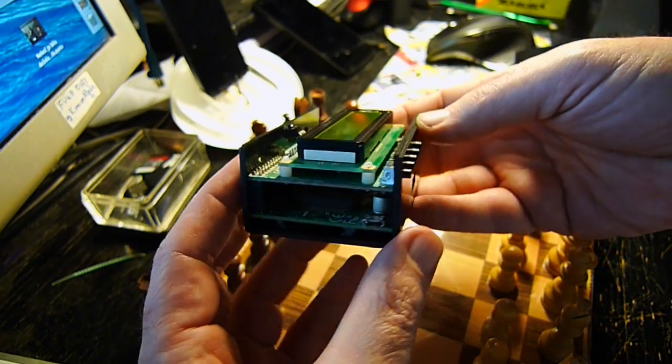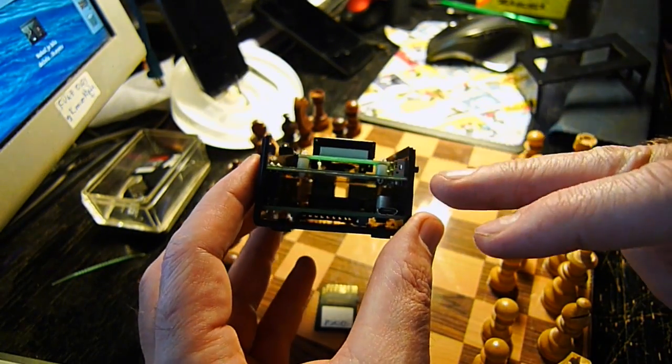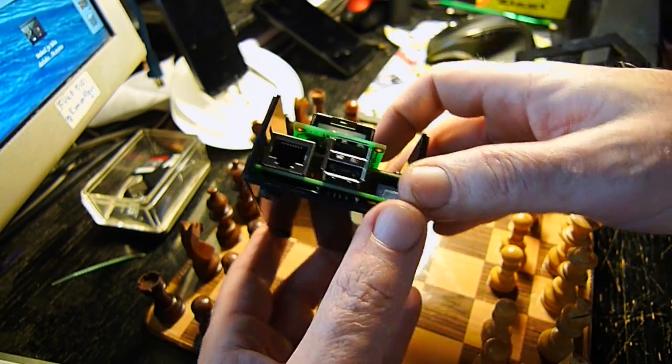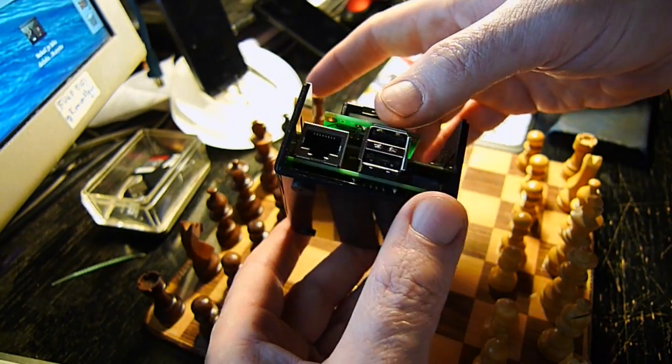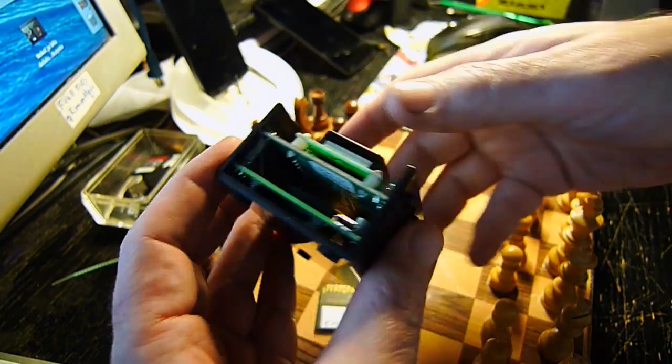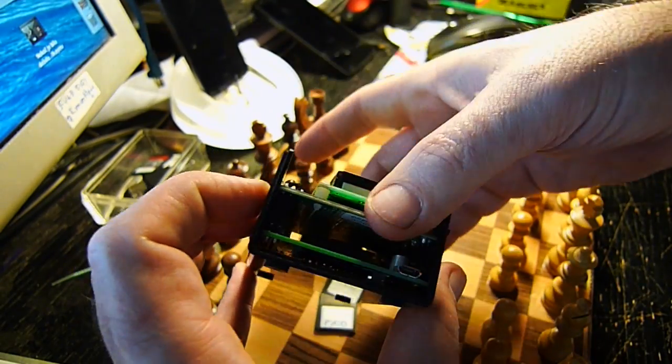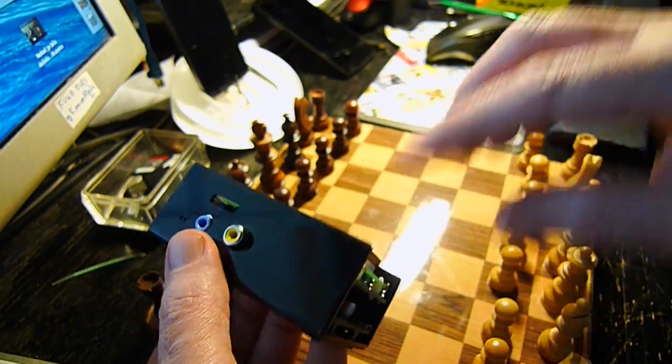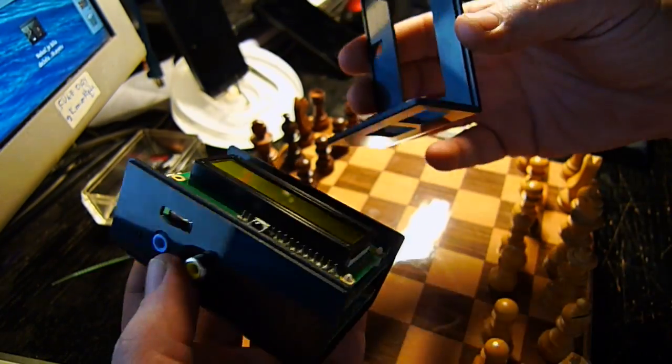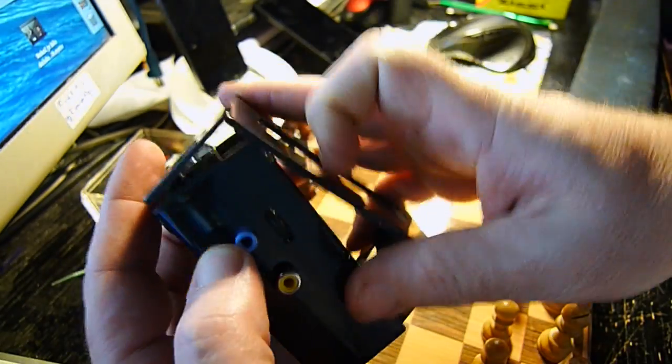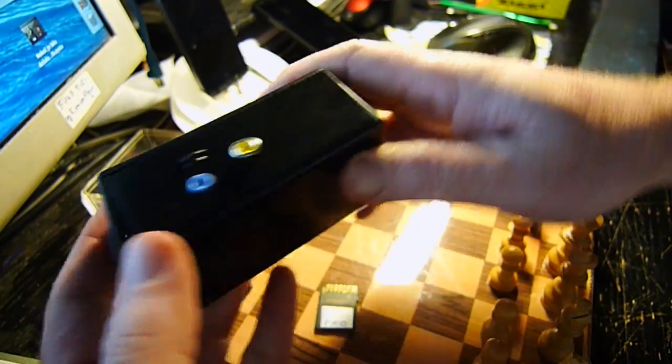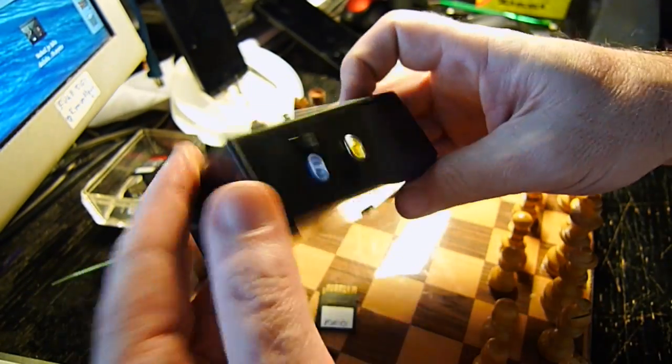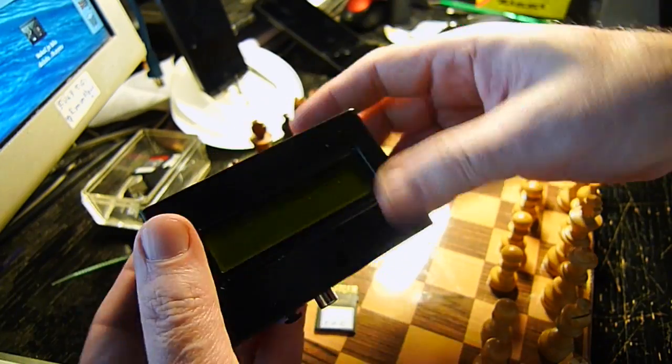Hello chess lovers. Here is my Raspberry Pi computer again with the Pi Face control and display interface mounted on top of it, but this time with a nice little black box that goes together like this and makes the machine immediately much more professional looking, wouldn't you say?